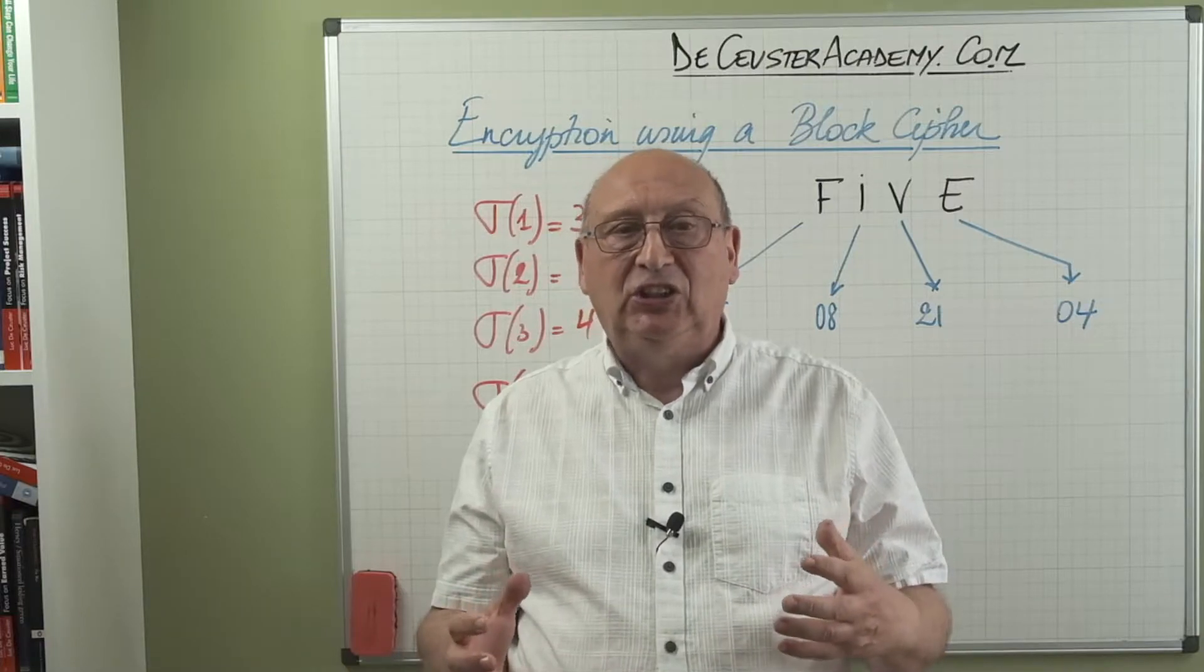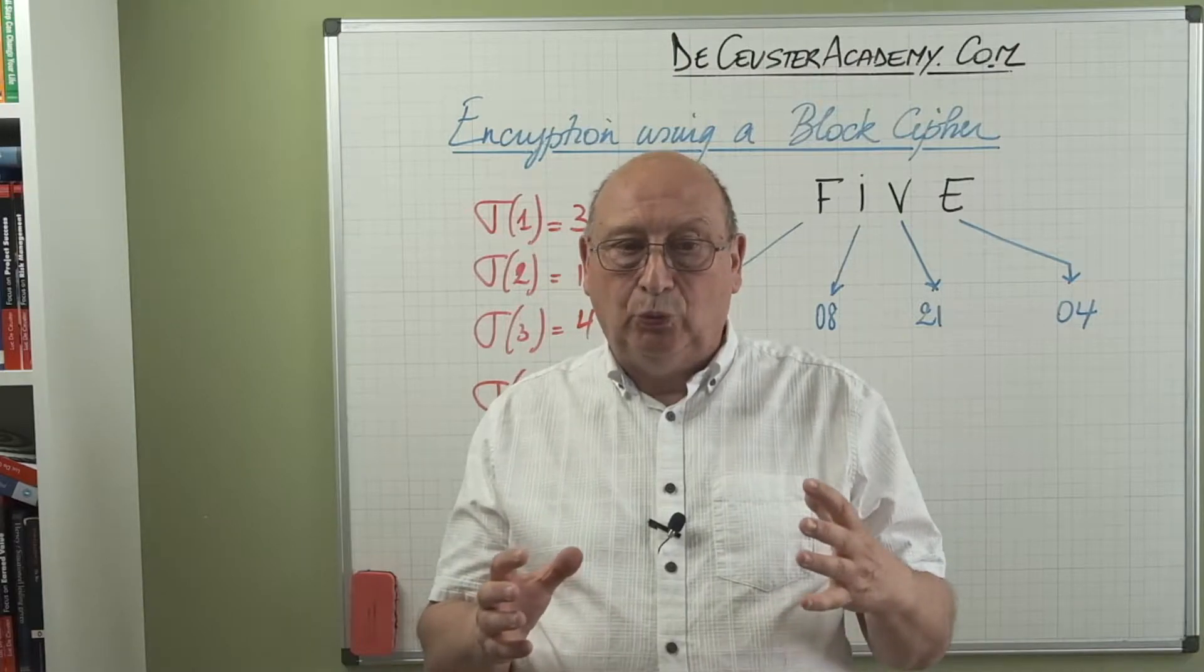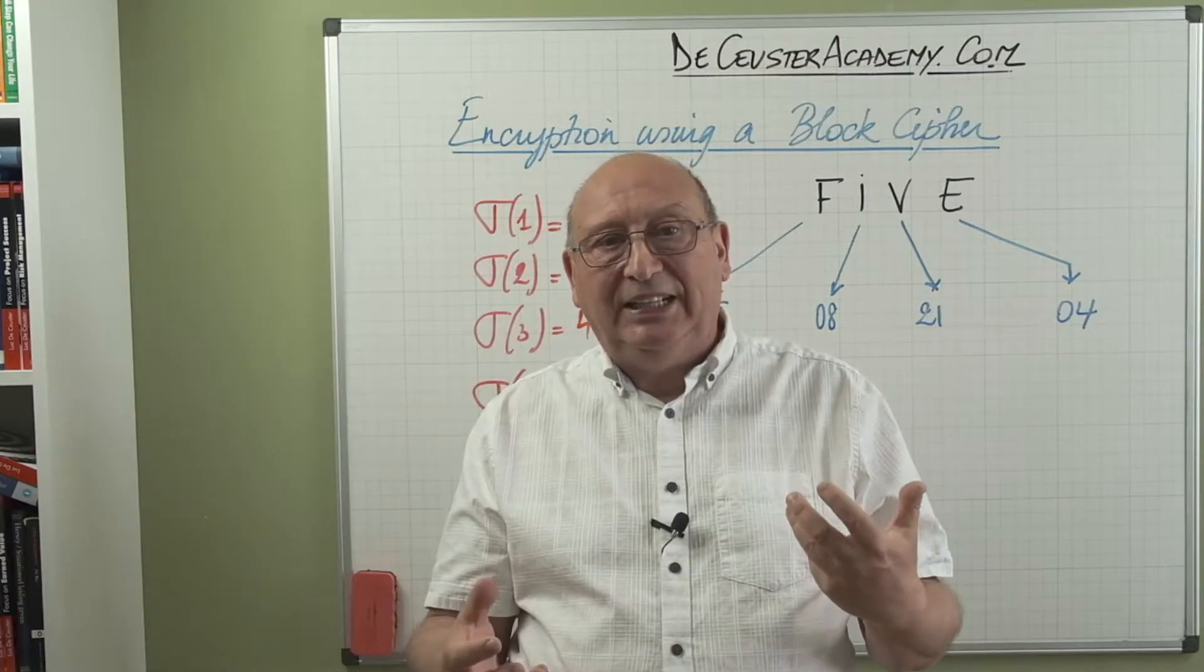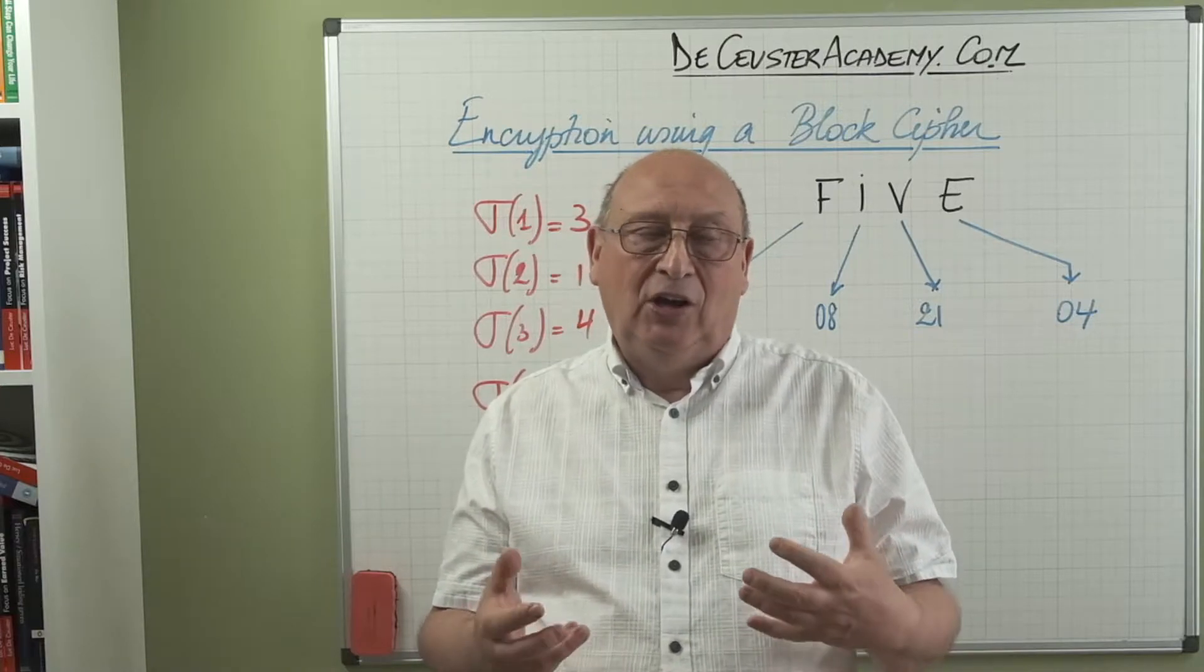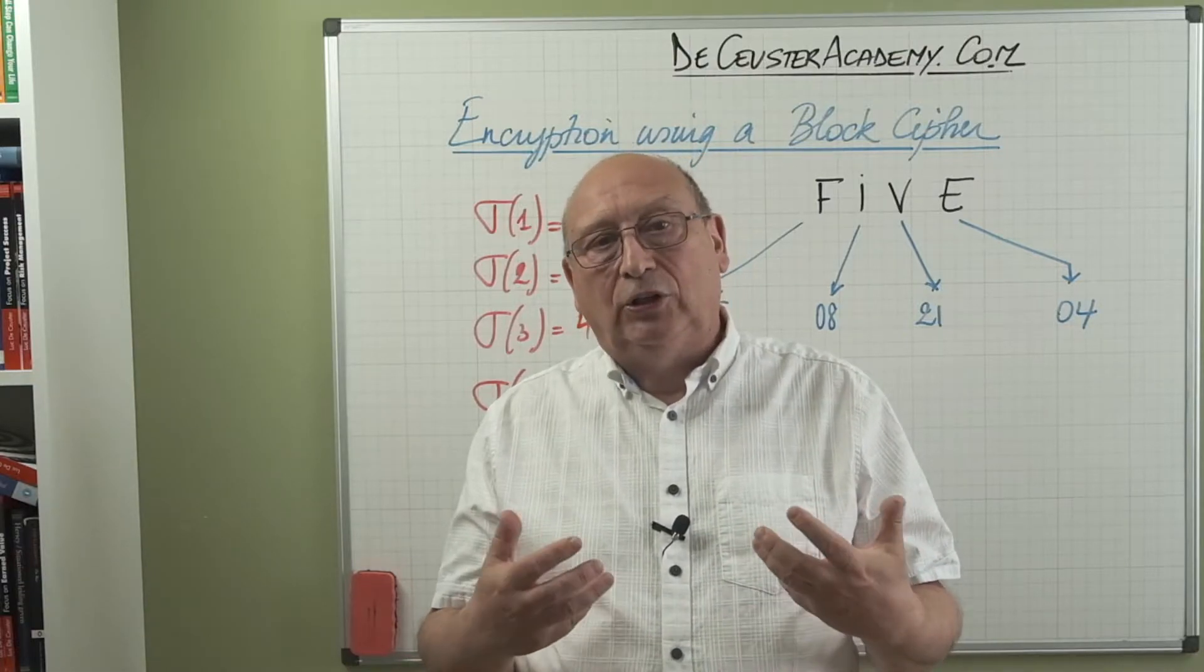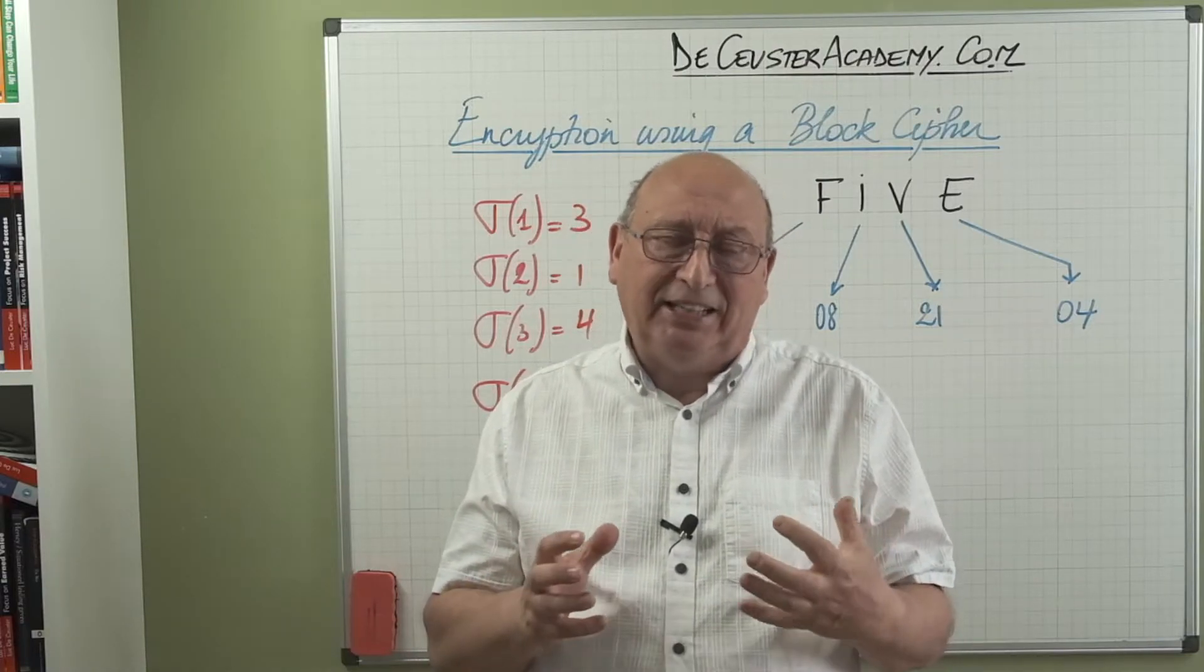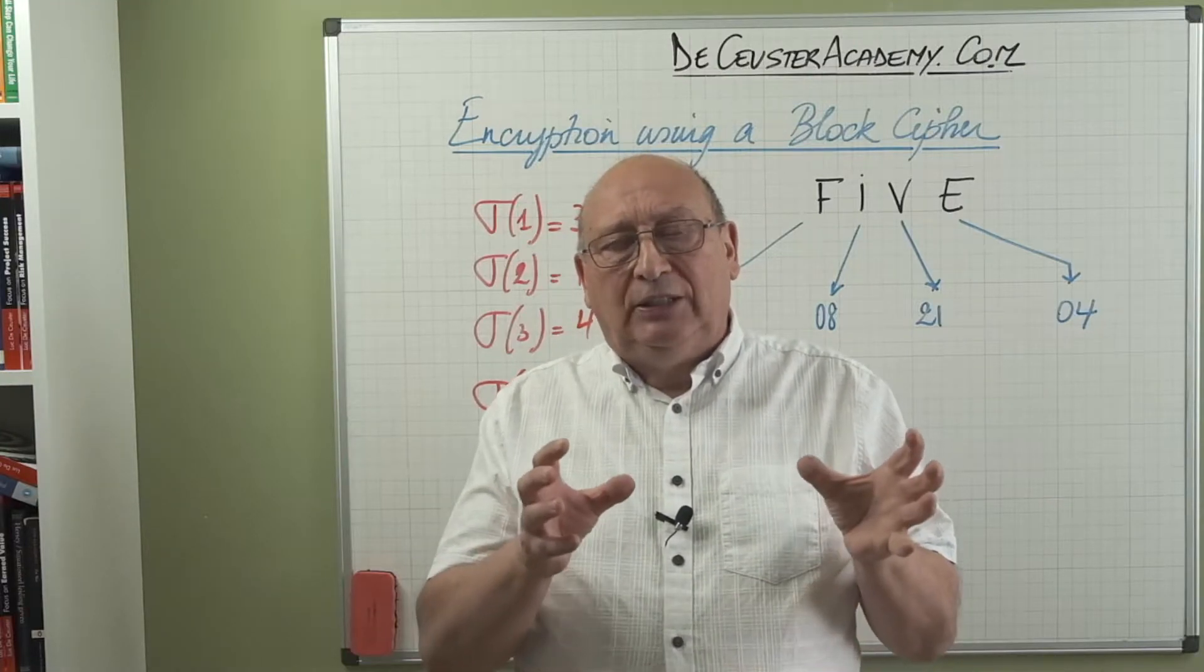In this new video I will talk about the more complex cipher, which is the block cipher. In the previous cipher, the Caesar cipher, the affine cipher, we always did the same transformation. We used the same values on all the letters of the word or the sentence or the message that we wanted to encrypt. Now that's quite easy to find, so we make it a little bit more complex.